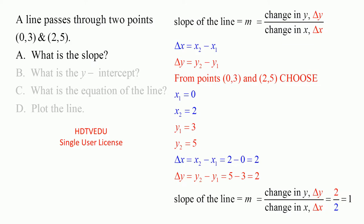So a line passes through two points: (0,3) and (2,5). What is the slope? We choose x₁, y₁ and x₂, y₂.